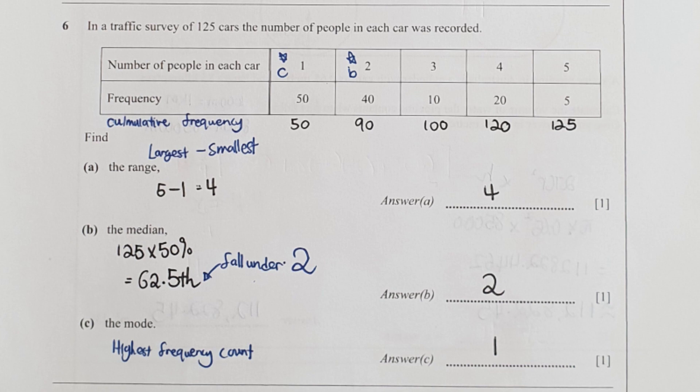For the median, you're required to use cumulative frequency to identify it. At 50 percent it is actually 62.5%, so this one is falling under the number of people in each car as 2. The mode is the one with highest frequency count, so that will be 1.